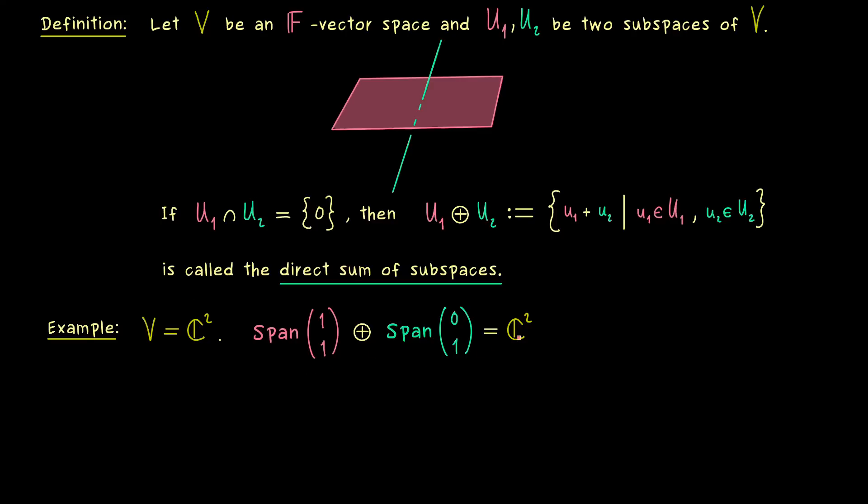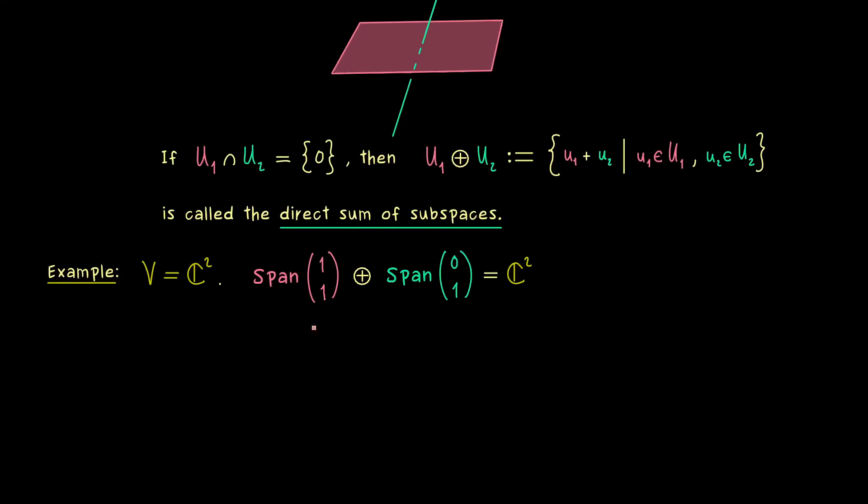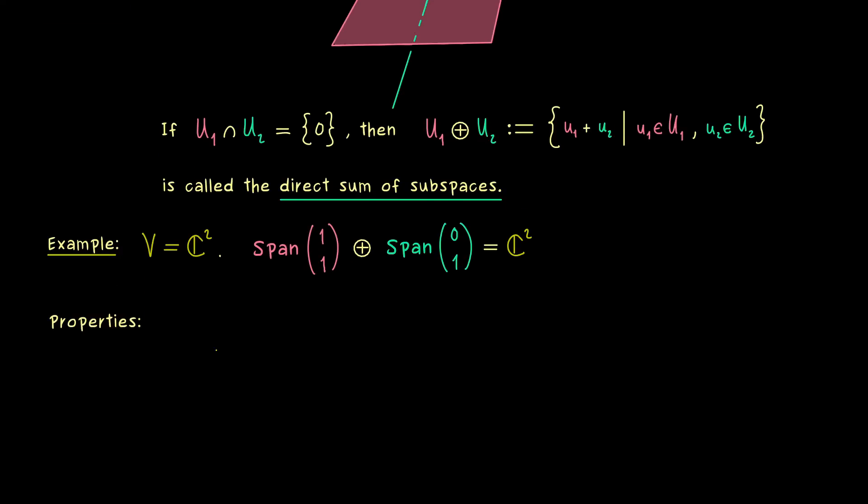This means the whole vector space C² can be written as this direct sum. In fact, this is a practical thing we use a lot to describe given subspaces. So you see, it's an important property you should remember, that the direct sum of subspaces is always a subspace again.